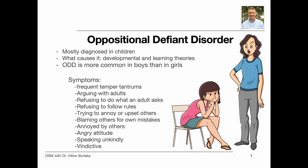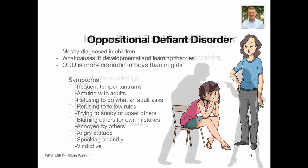Symptoms of ODD may include having frequent temper tantrums, arguing a lot with adults, refusing to do what an adult asks, always questioning rules and refusing to follow rules, doing things to annoy or upset others including adults, blaming others for the child's own misbehaviors or mistakes, being easily annoyed by others, often having an angry attitude, speaking harshly or unkindly, and seeking revenge or being vindictive.